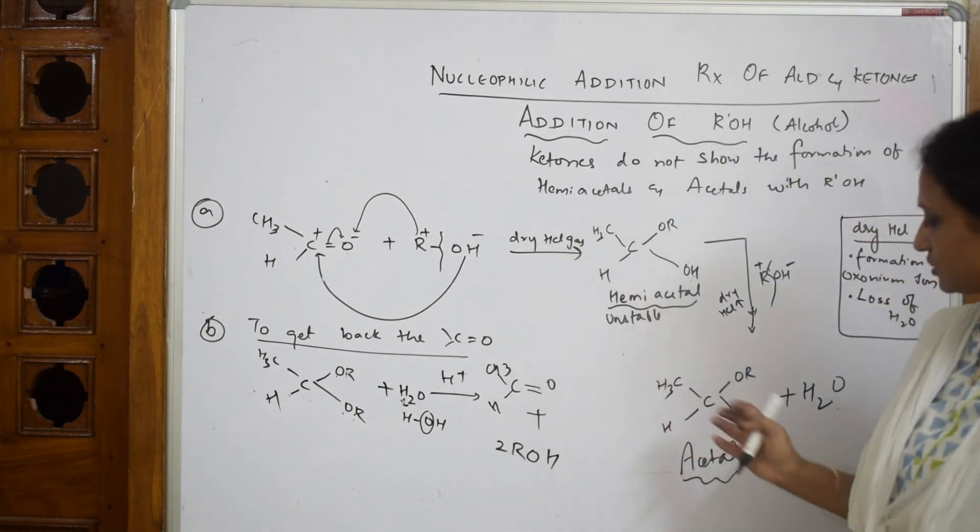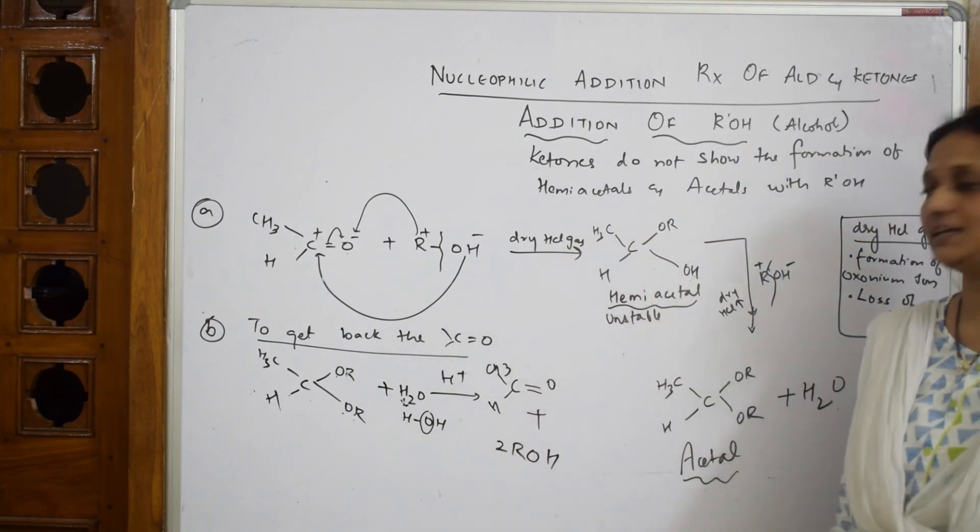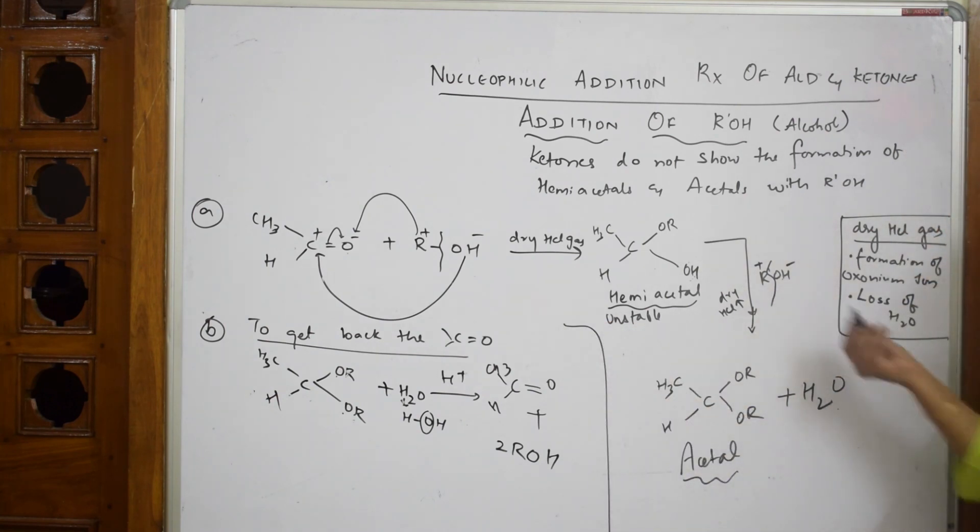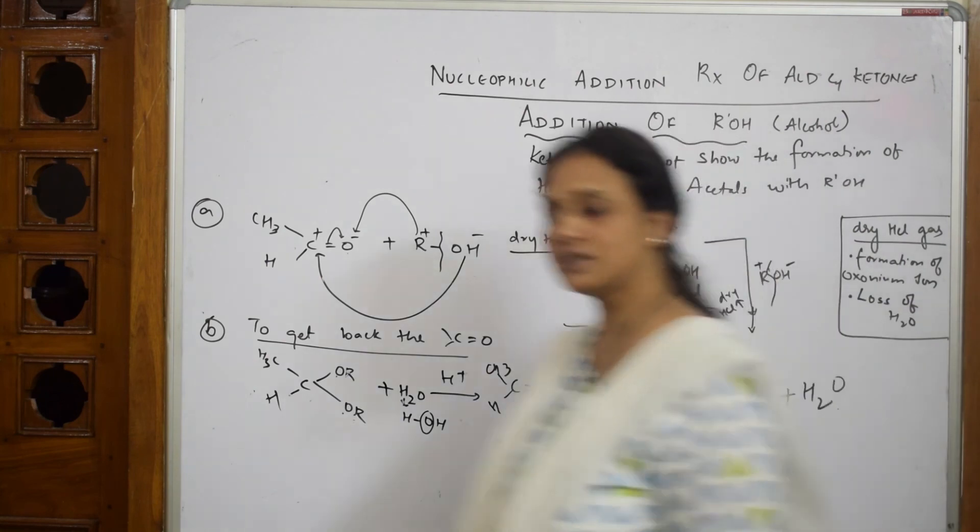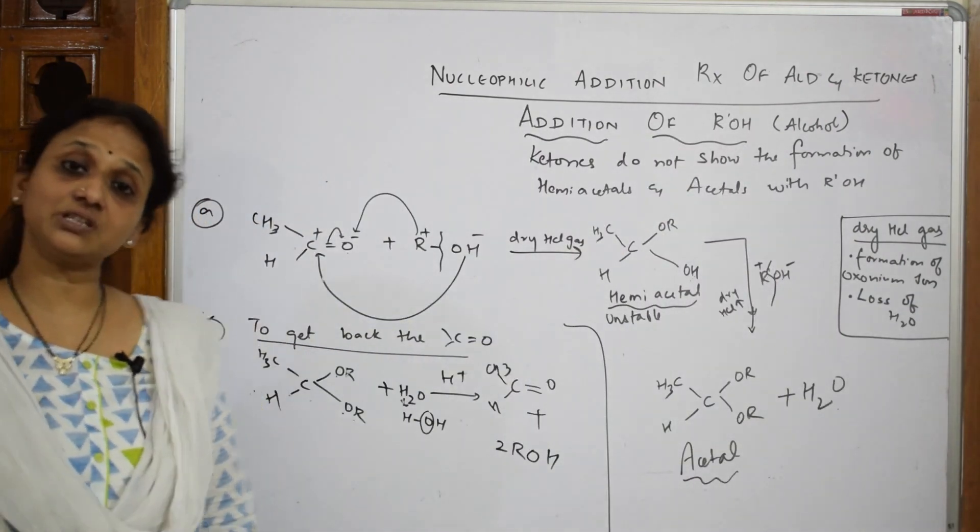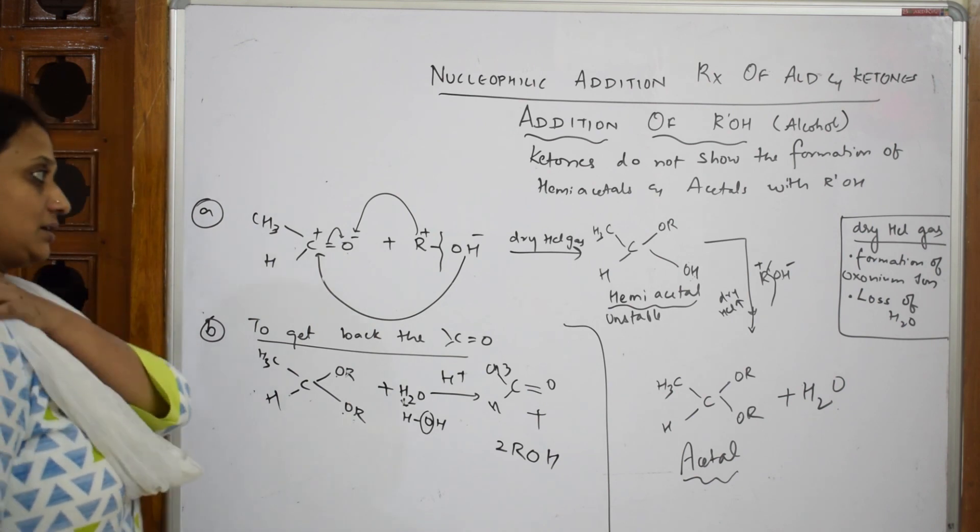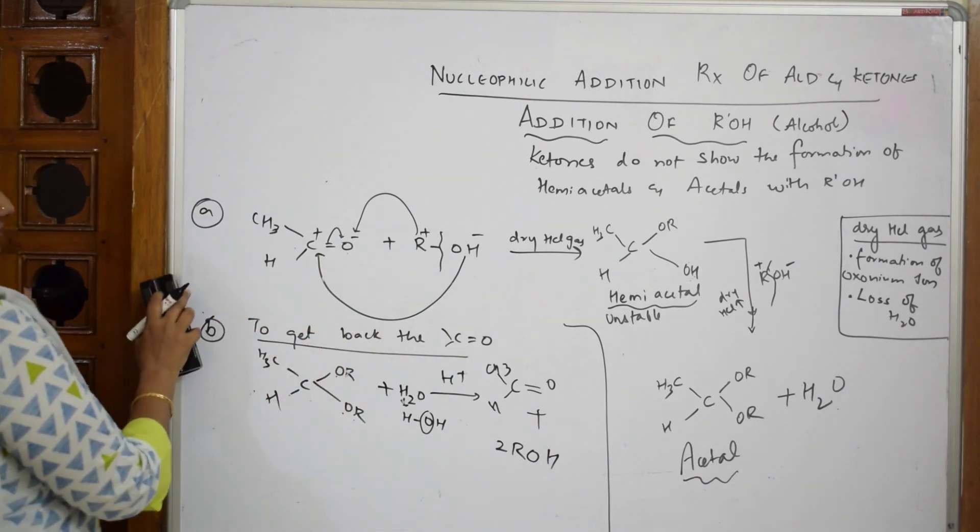So this process is used to retain that aldehyde back. Please remember, very important, hemiacetal and acetal formation. Now let us see why ketones are not showing this alcohol reactions. We will see that question in the next week.